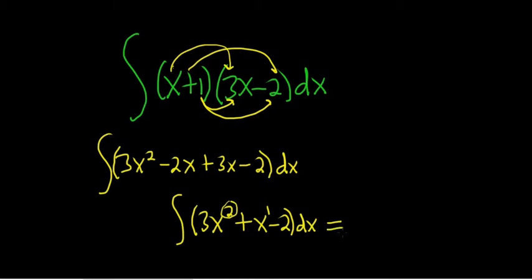So now we're integrating. So we'll drop the integral sign. This will be 3x to the, well, 2 plus 1 is 3, and then you divide by the 3 plus x. And then 1 plus 1 is 2, and then you divide by the 2, so 2 minus.